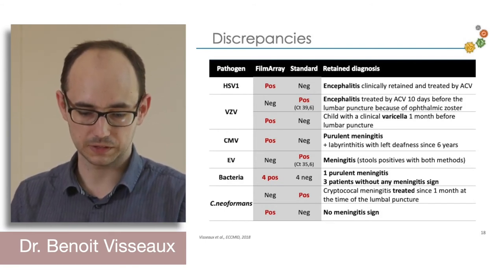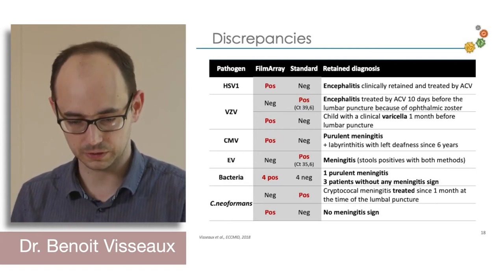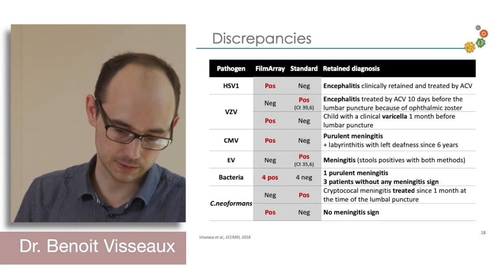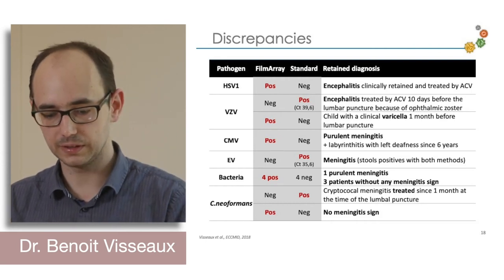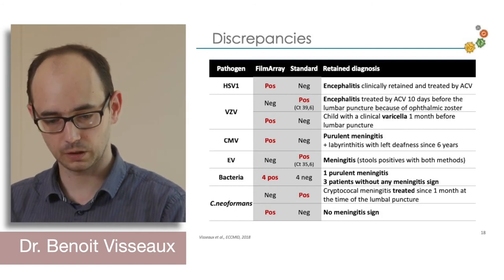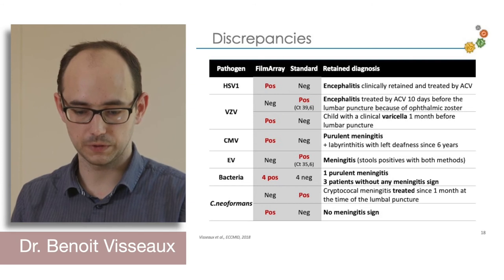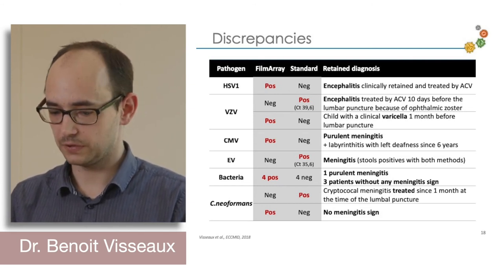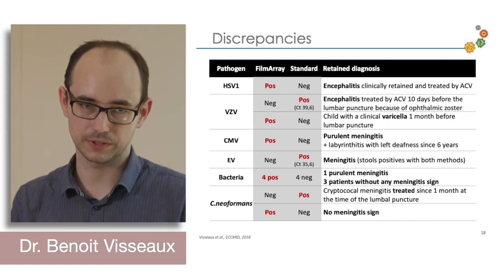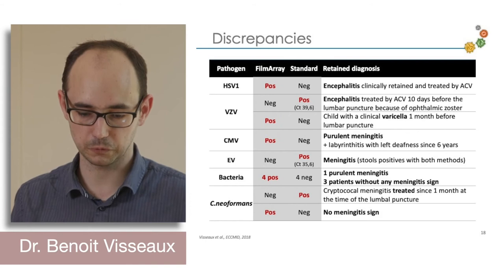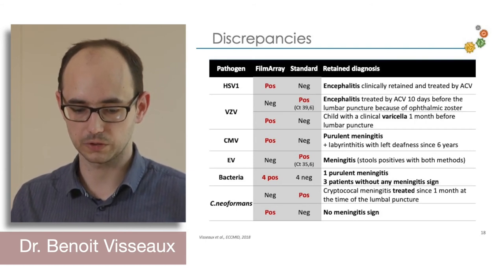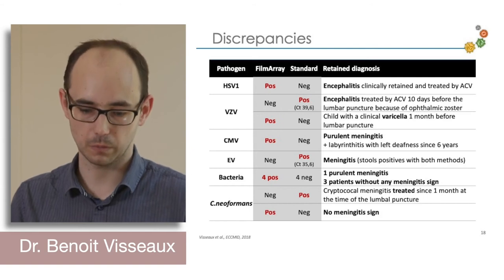Regarding the four positive bacteria by FilmArray not confirmed by standard assay, and for cryptococcus neoformans — one was missed by FilmArray because the patient had been treated for cryptococcosis for one month, explaining the negative PCR. In summary, almost all discrepancies regarding virology are fully explained. Only one enterovirus with a Ct of 35 was missed in more than 500 assays. For bacteria and cryptococcus, always discuss results carefully with the physician, as you must interpret positive results smartly.